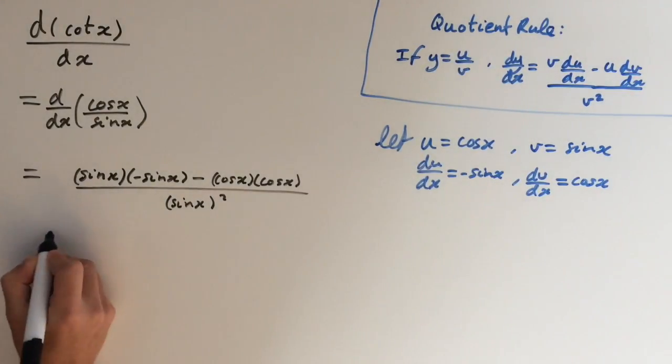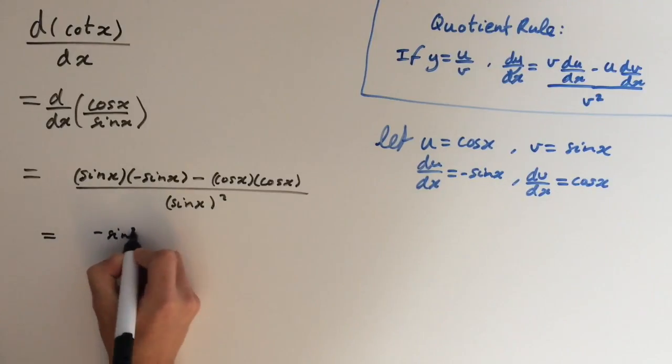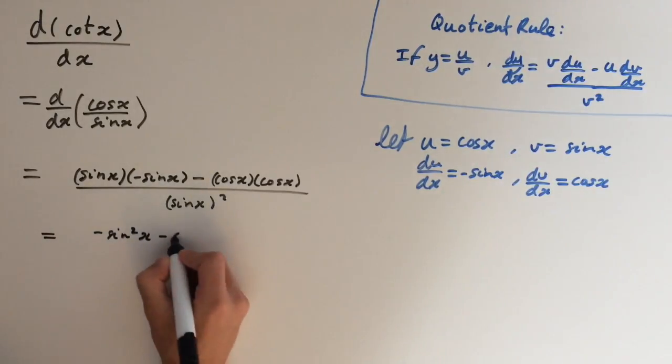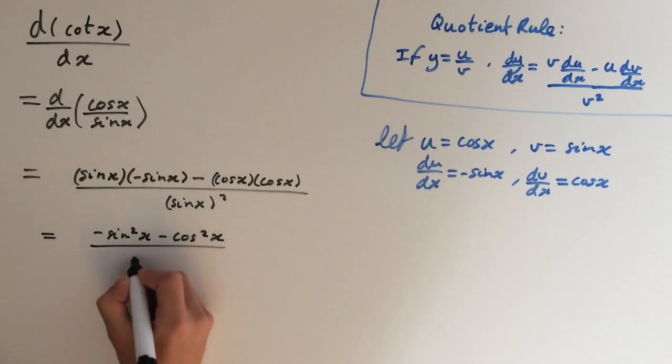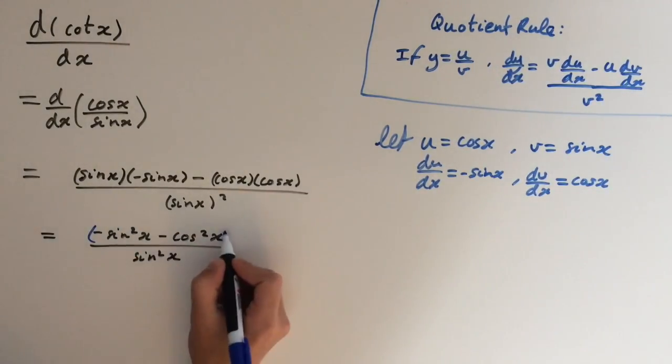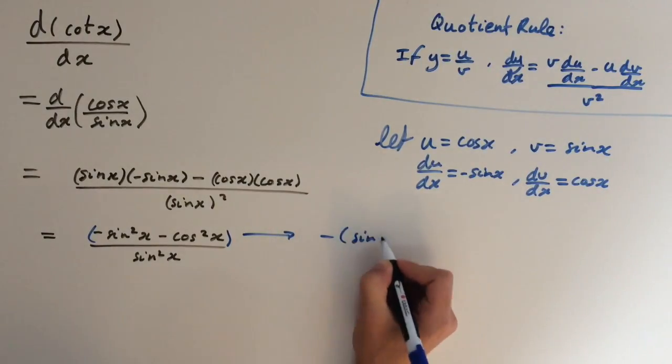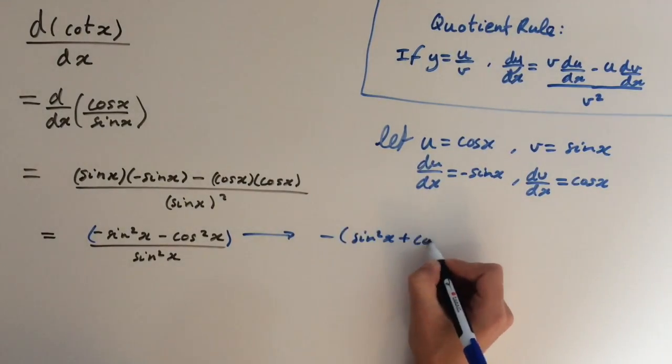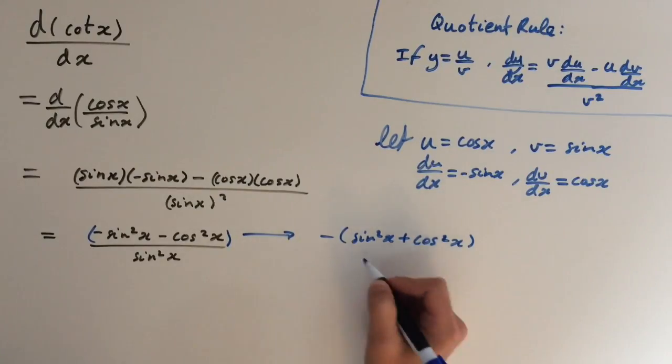So let's expand these brackets. We get minus sin squared x minus cos squared x over sin squared x. But this right here on the numerator we can express as minus sin squared x plus cos squared x. And this right here inside the bracket equals 1.